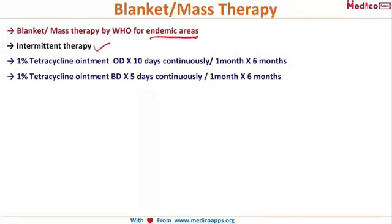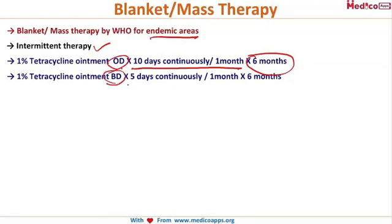Blanket therapy is an intermittent type of therapy: 1% tetracycline ointment is given once a day for 10 days in a month for 6 months duration. Alternatively, it can be given twice a day for 5 days a month for 6 months — same total dose.